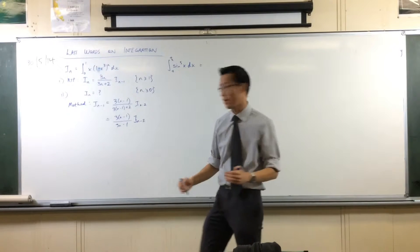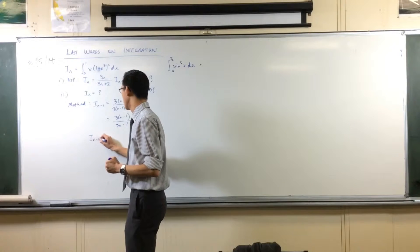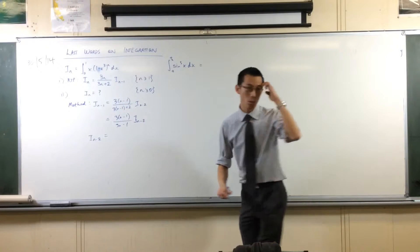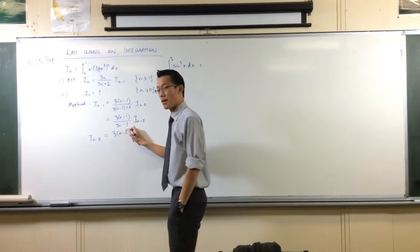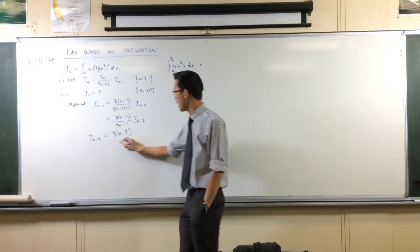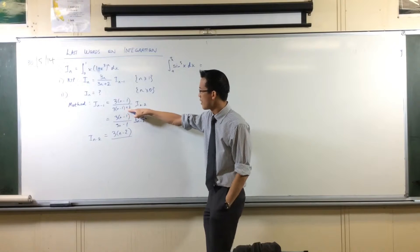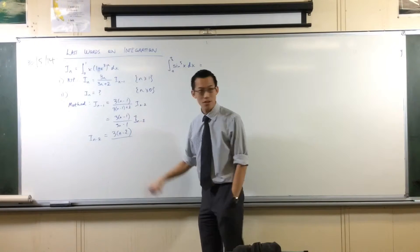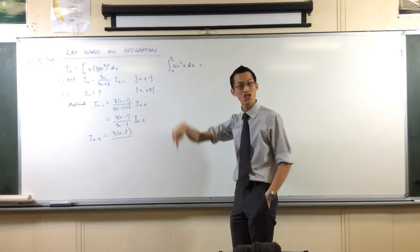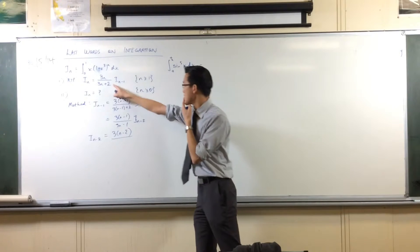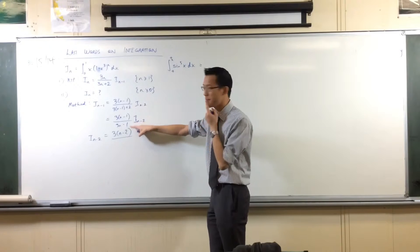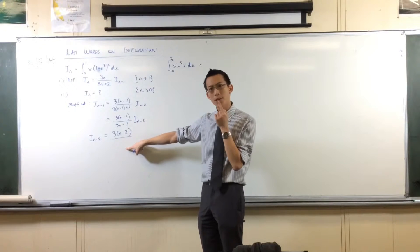3n minus 1 brackets, that's 3n minus 3, isn't it? So 3n minus 3 plus 2, what's that? 3n minus 1, yes? That looks all right. And then you've got your I_{n-2} hanging over on this side. Let's keep going down the ladder.